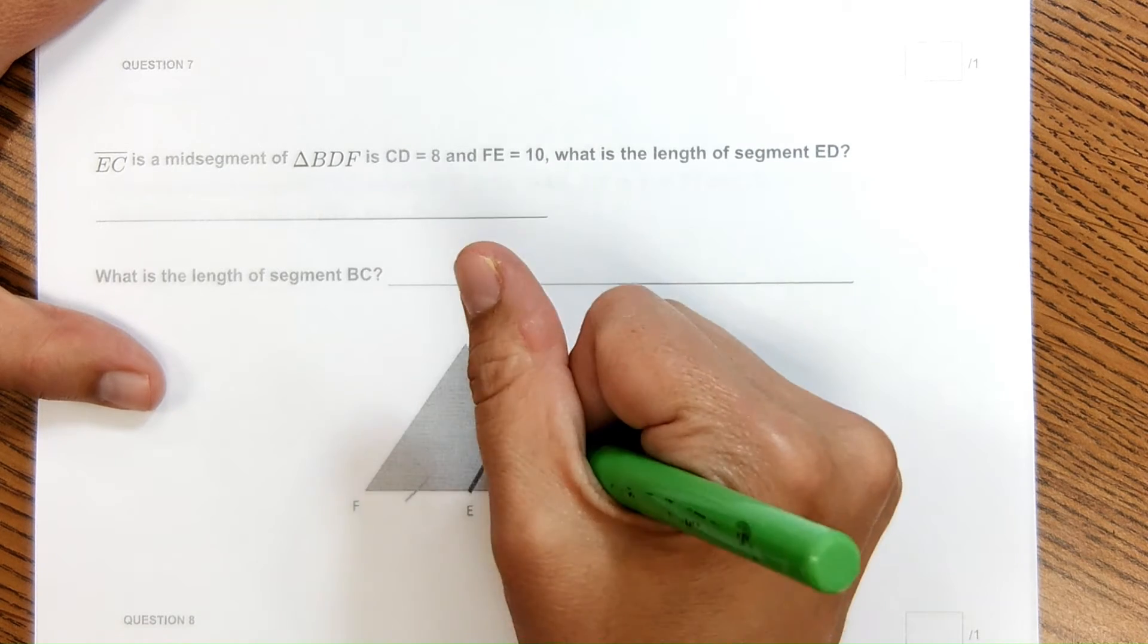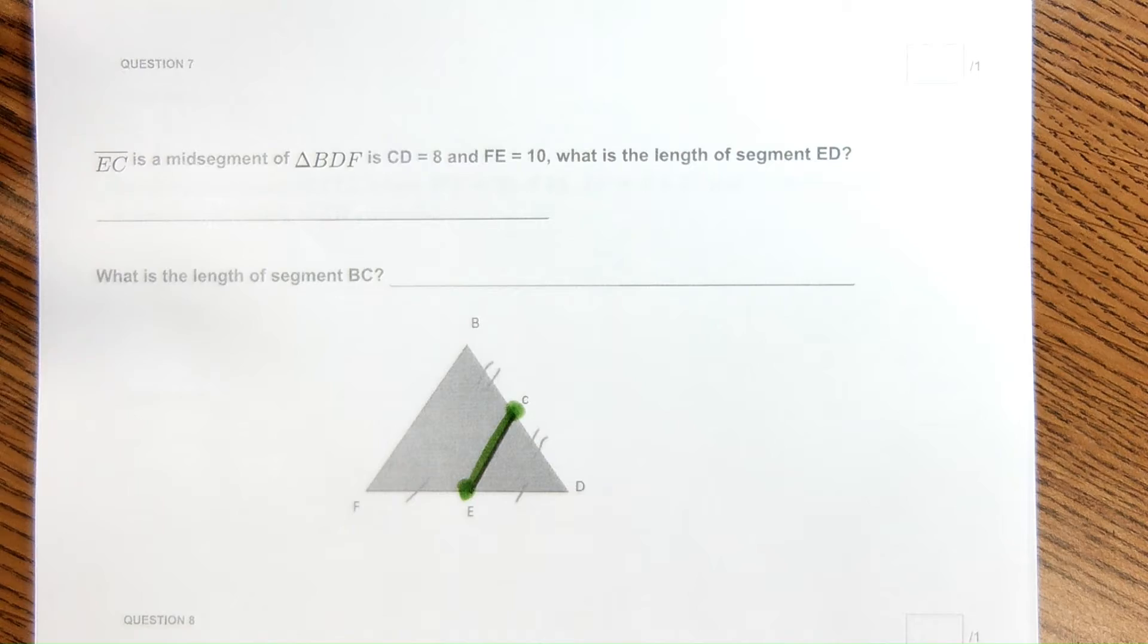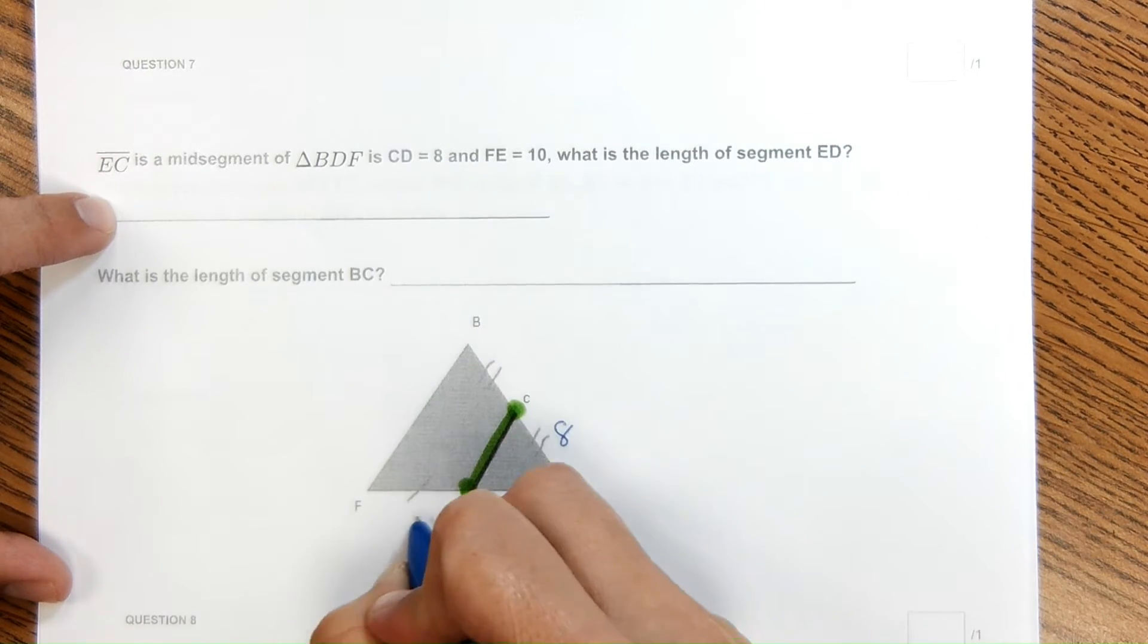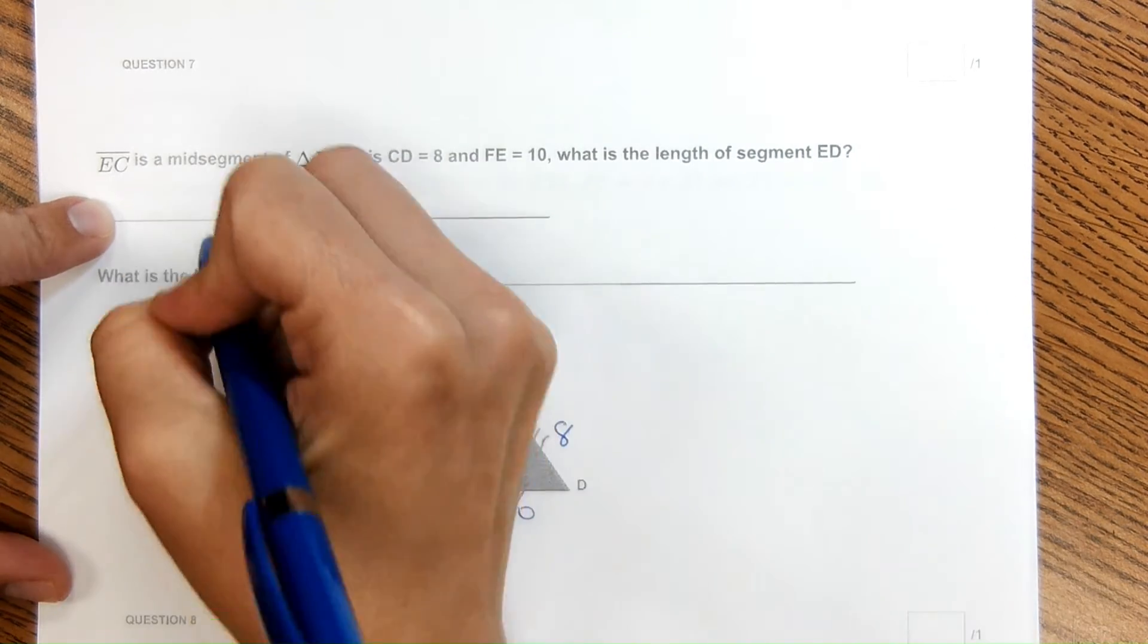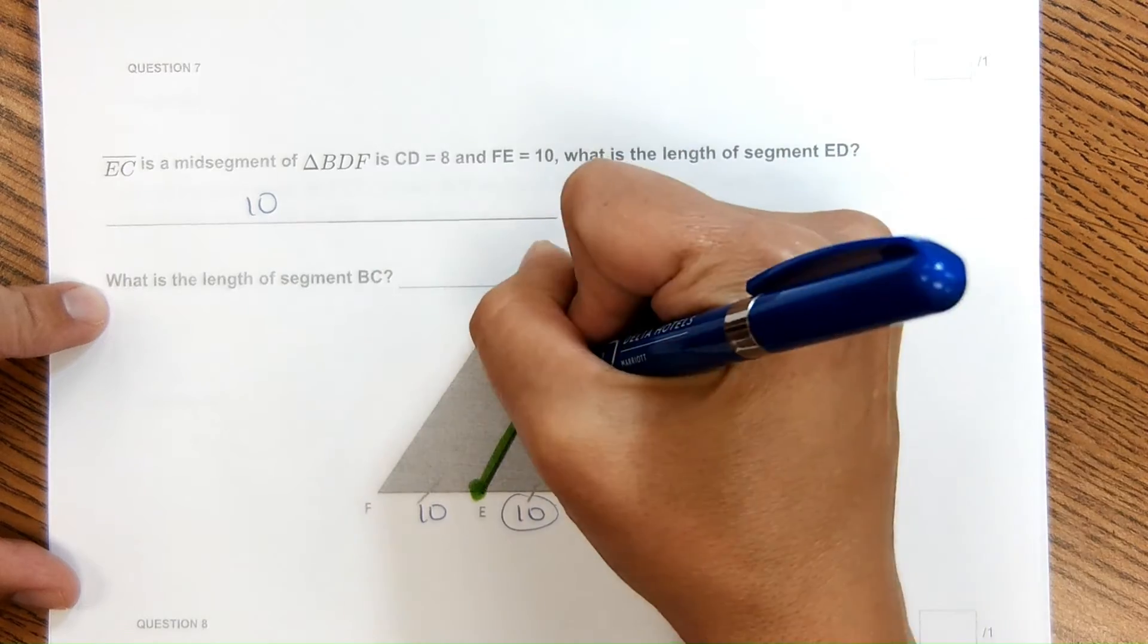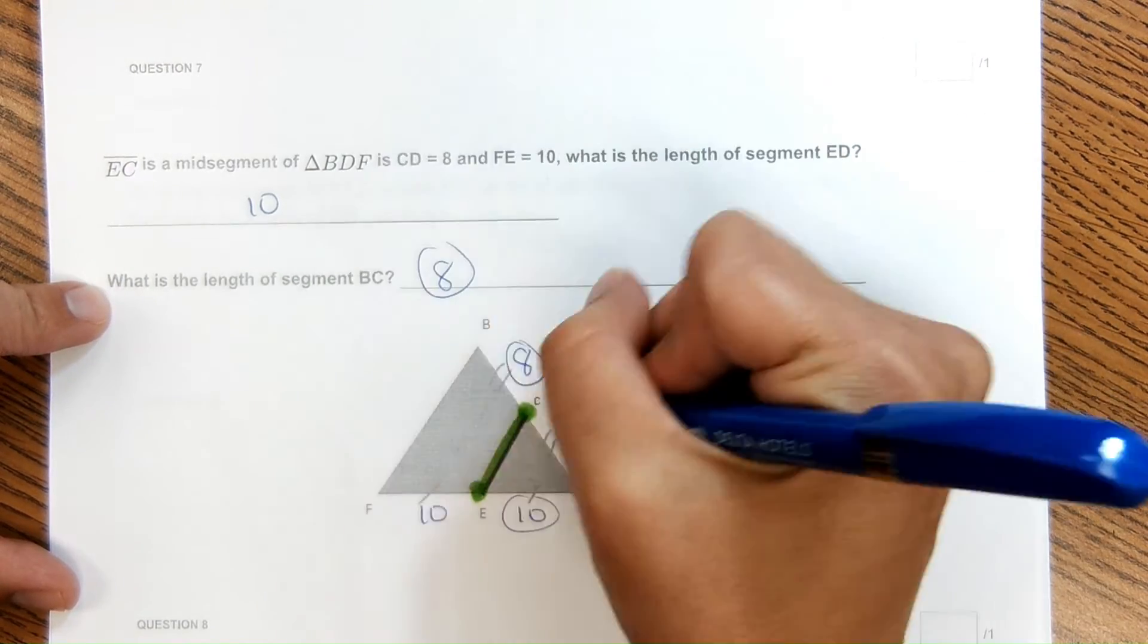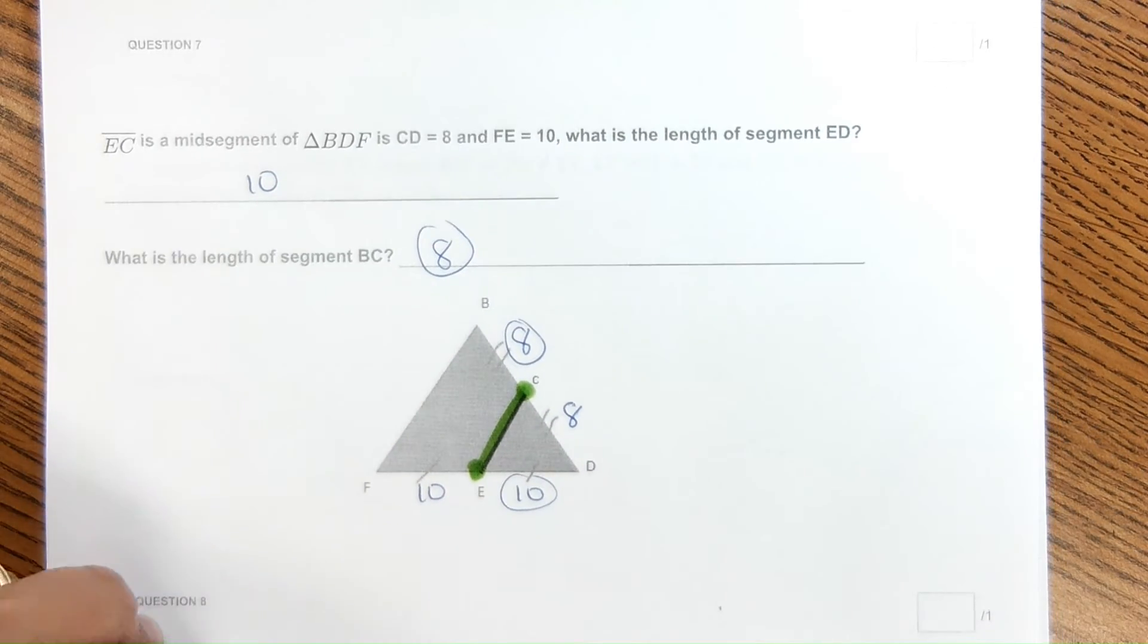The next one is very similar to that. Again, it tells us that EC is a mid segment. That means it hits at the midpoint of each of these segments of the triangle. It says CD is 8, FE is 10. What is the length of ED? Well, it would have to be 10. And then what is the length of BC here? It would be 8 because these two are the same length. And this point C is a midpoint of that segment.